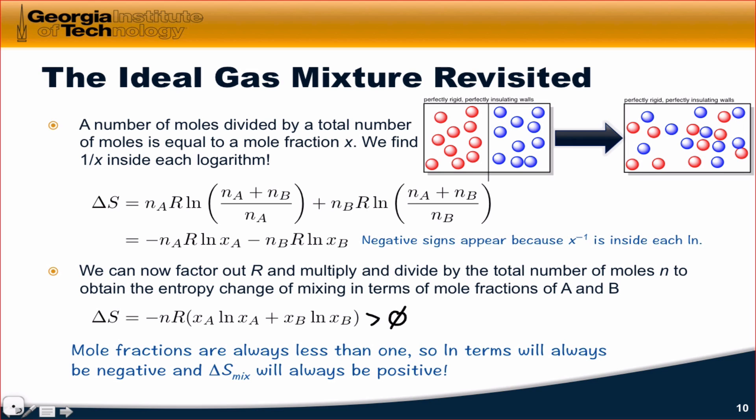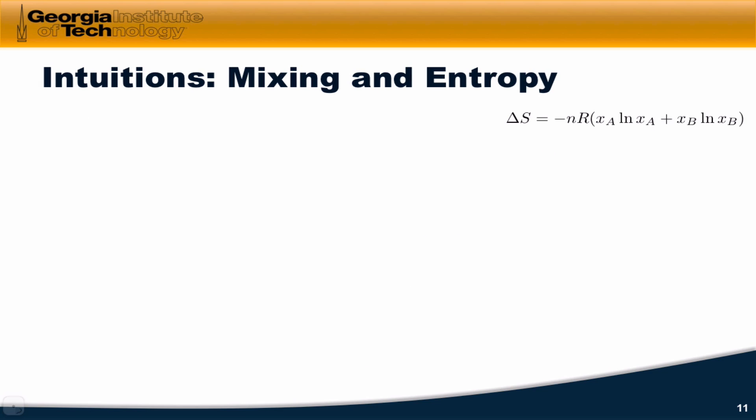This is a useful expression for the entropy of mixing because it shows us how concentrations, that is, the number of moles of each species in the mixture per the total number of moles, influences delta S, how much the entropy changes for particular concentrations. And concentrations, as we'll see when we talk about equilibrium in a future video series, are all over the place in chemistry and are relatively straightforward to measure.